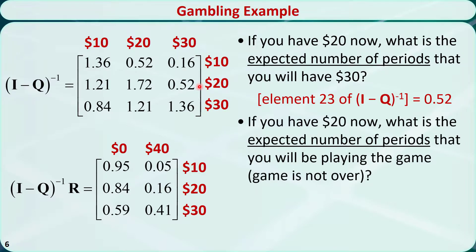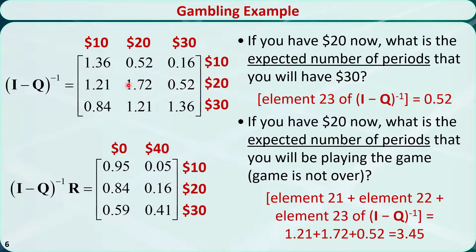The second question: if you have $20 now, what is the expected number of periods that you will be playing the game, or the game is not over? Simply put, we are trying to understand how long the game will last. It is equal to the time you will have $10 in hand plus the time you will have $20 in hand plus the time you will have $30 in hand. It is the sum of element 2,1, element 2,2, and element 2,3 of the fundamental matrix. The answer is 3.45.